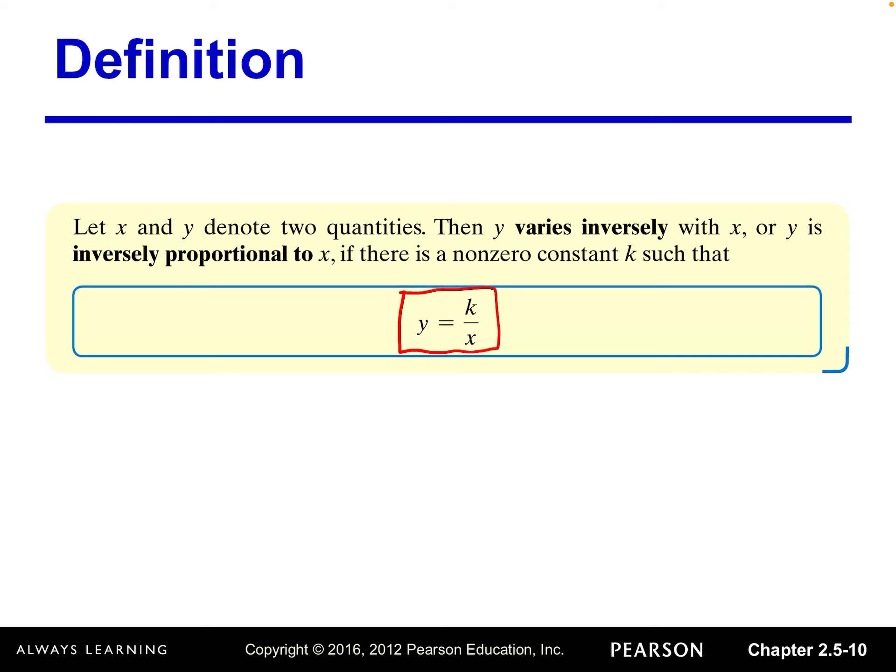In the previous section, we have learned some of the key functions, right? One of it is y equals 1 over x. We call it reciprocal function. Okay, let's recall reciprocal function. The graph looks like this.